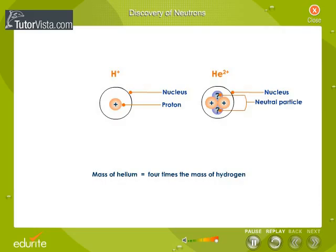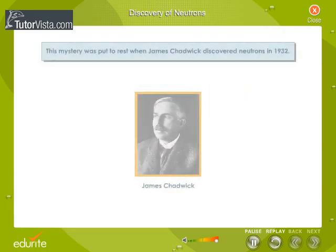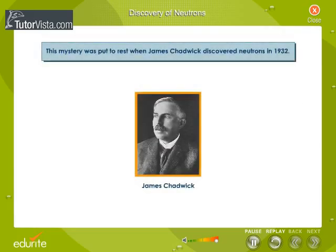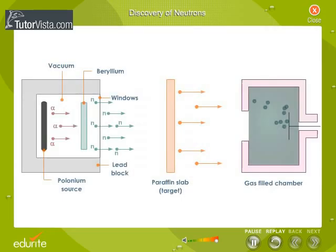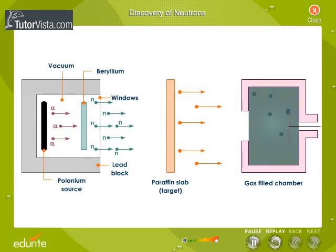This suggests that there is some other type of neutral particle present inside the nucleus along with the protons. This mystery was put to rest when James Shadwick discovered neutrons in 1932. Let us now understand the experiment performed by Shadwick with the help of a flowchart.